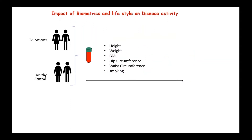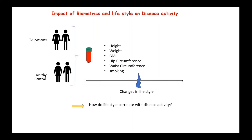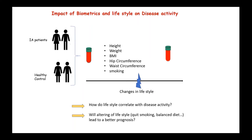We are also incorporating biometrical lifestyle factors into our study. We are collecting different parameters including height, weight, BMI, hip circumference, waist circumference, and smoking habit. We are recruiting healthy controls and inflammatory arthritis patients, and we want to understand how lifestyle correlates with disease activity. But also, should the patient decide to make a change in their lifestyle — for instance, quit smoking or start a balanced diet — we want to understand if this could lead to a better prognosis.